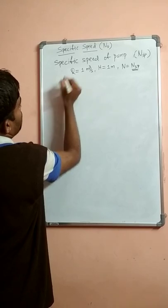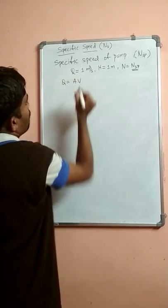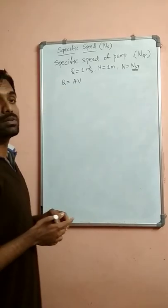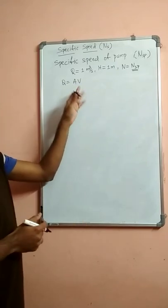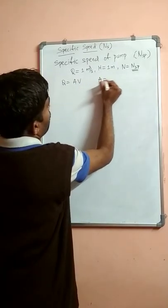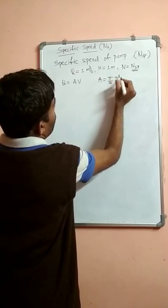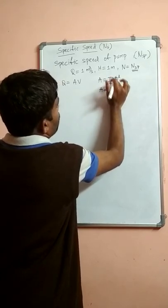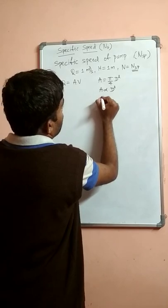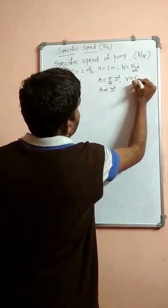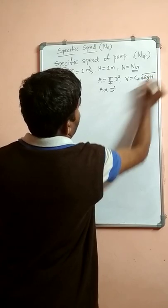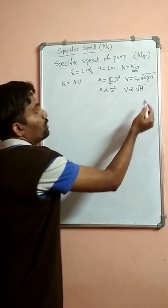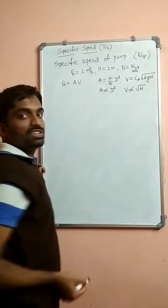To get the expression, we consider the discharge or continuity equation Q equals A into V, applicable for incompressible fluids, where A is the area of cross section and V is the velocity. A equals pi by 4 D square, which is directly proportional to D square since pi by 4 is constant. For V, using V equals Cd into square root of 2gH, and since Cd, 2, and g are all constant, V is directly proportional to square root of H.